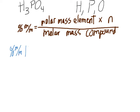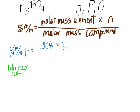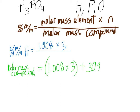We'll use the equation three times since there are three elements. For hydrogen: percent by mass equals the molar mass of hydrogen, 1.008, times 3, divided by the molar mass of the compound. Let me calculate the molar mass of the compound first — it's the sum of all atomic masses: hydrogen times 3, plus phosphorus times 1, plus oxygen times 4.